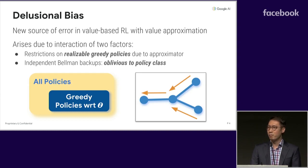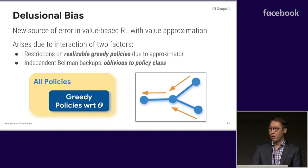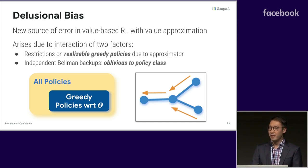And today I have some even more bad news for you. There are still fundamental issues lurking within value-based RL that have gone unnoticed after all these years. In this work, we present a new type of problem called delusional bias, which arises for two reasons. First, with a function approximator, we're inherently restricting the class of realizable greedy policies that we can execute. Second, classical algorithms like value iteration and Q-Learning perform Bellman backups independently at each state-action pair, completely ignoring this policy class restriction.